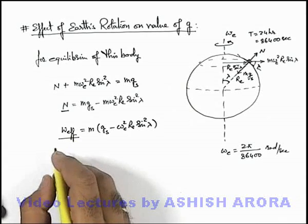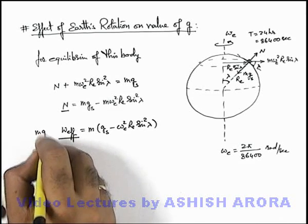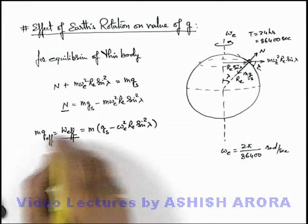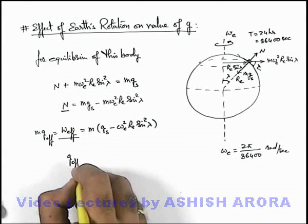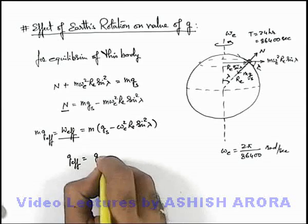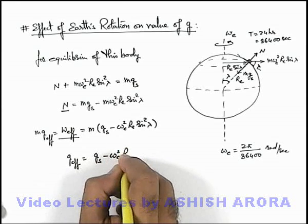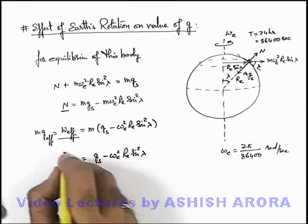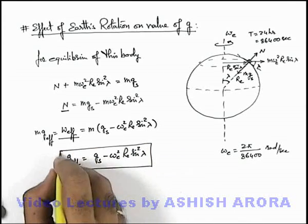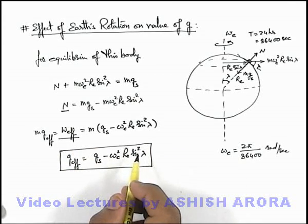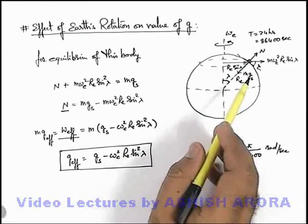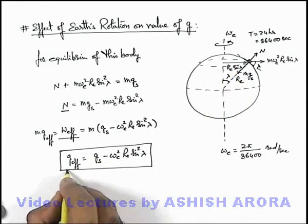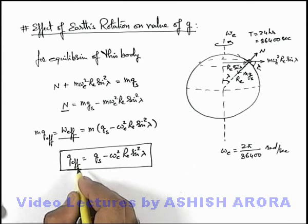This effective weight can also be written as m multiplied by g_eff if g_eff is the effective gravity. So the value of effective gravity we are getting is g_s - ω_e² r_e sin² λ. This is quite a useful relation, and we can see as co-latitude at any point on Earth's surface changes, the value of effective gravity experienced by the body on Earth's surface changes.